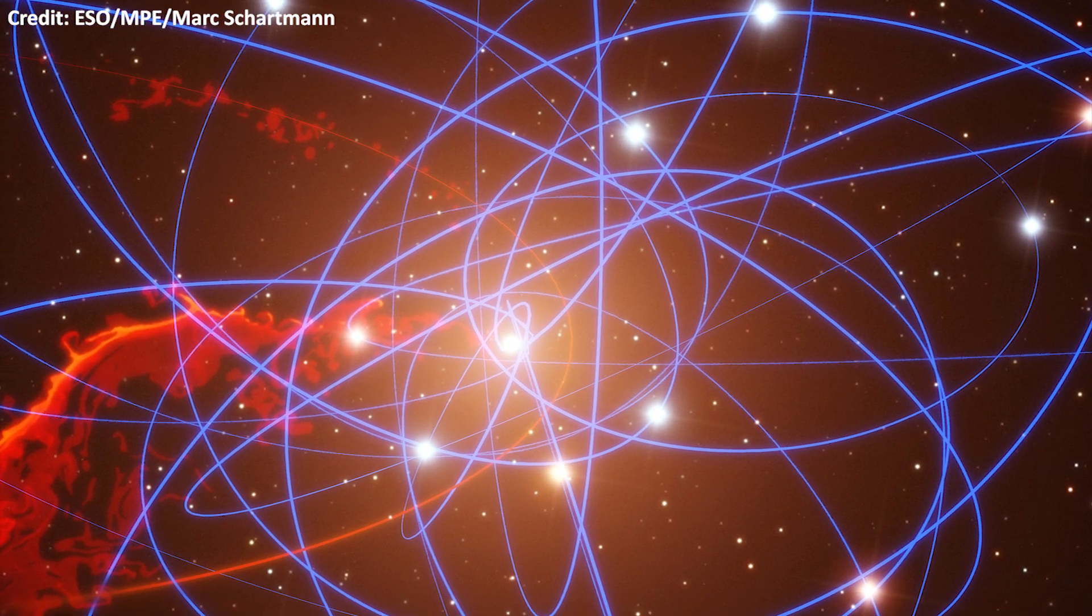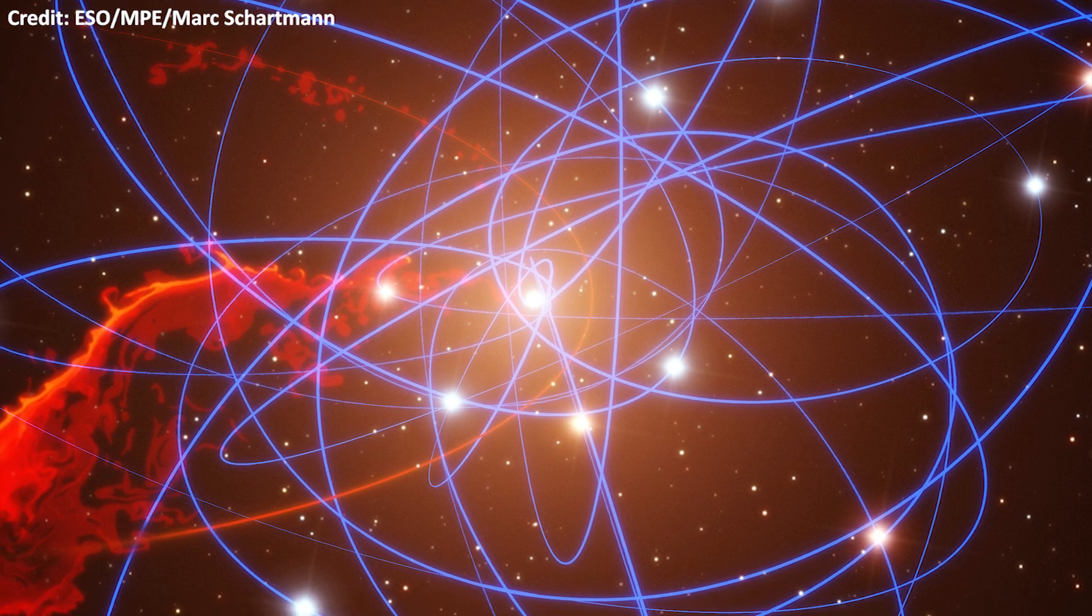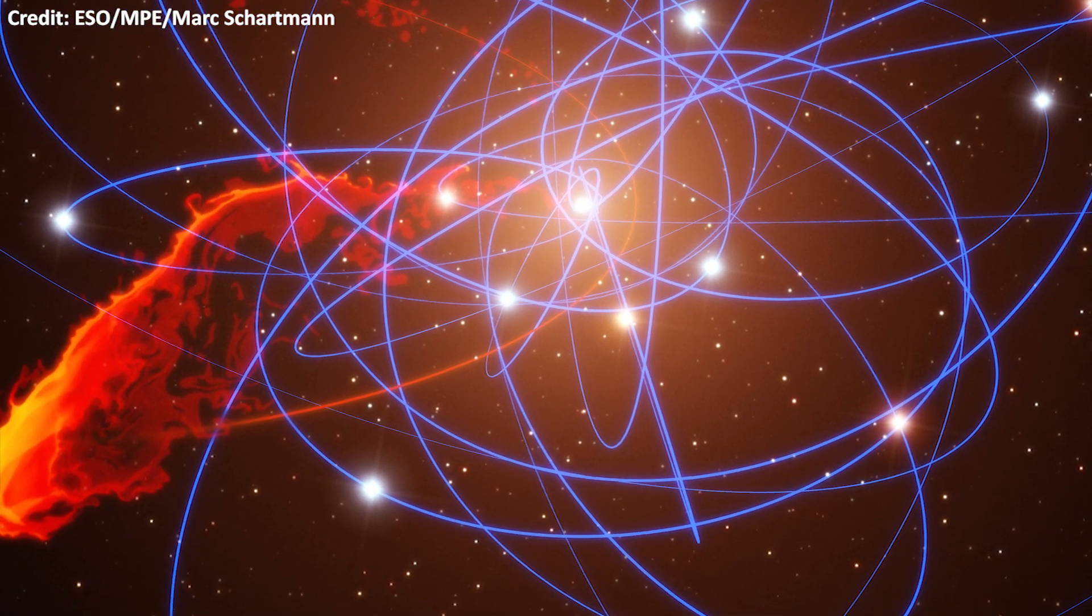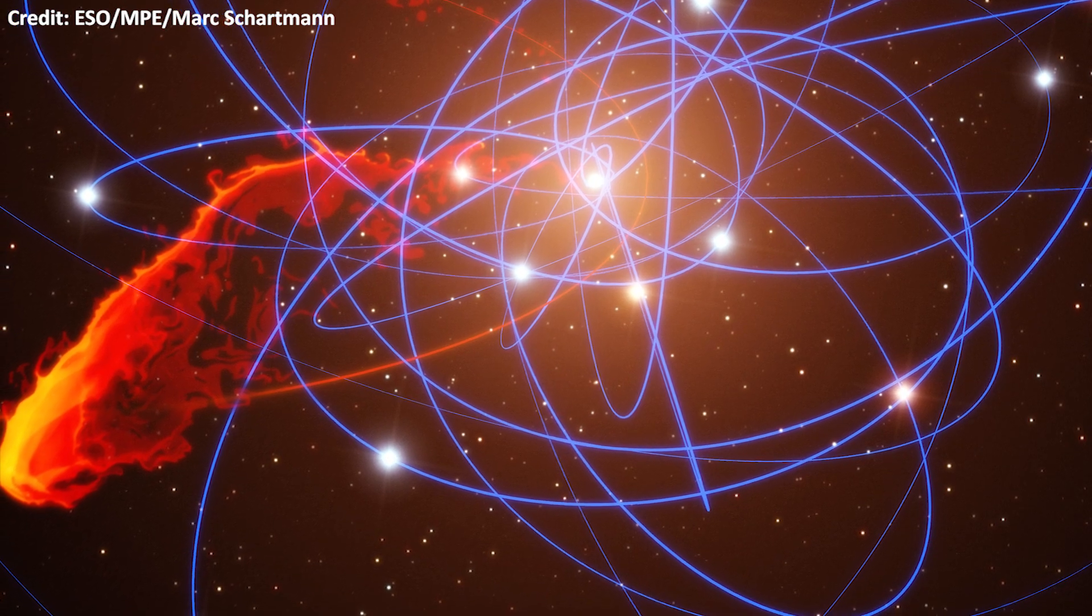Another reason might be a cloud of dust known as G2 which passed about 36 light hours from Sagittarius A in 2014. However, more observations might shed light on this mystery.